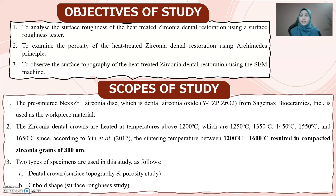The objectives of the study: First, to analyze the surface roughness of the heat-treated zirconia dental restoration by using a surface roughness tester. Second, to examine the porosity of the heat-treated zirconia dental restoration by using Archimedes' principle. Third, to observe the surface topography of the heat-treated zirconia dental restoration by using a scanning electron microscope.